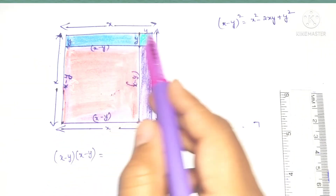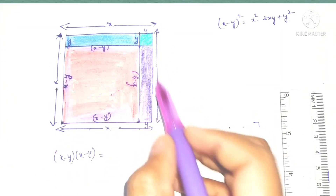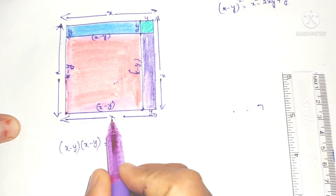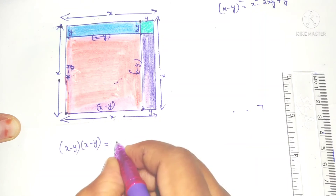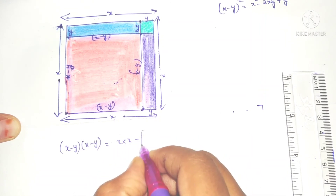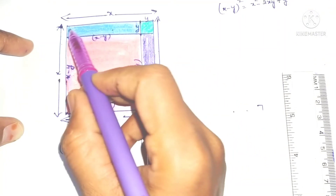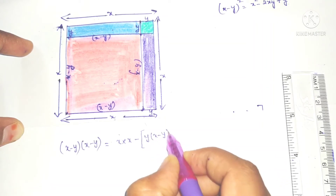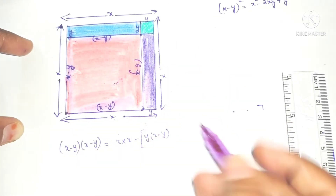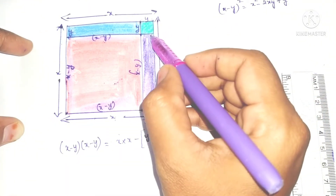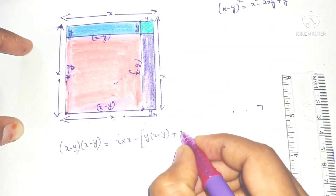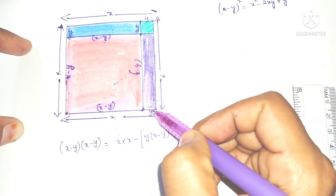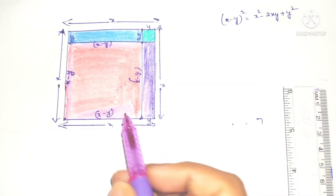To calculate this orange color area, we have to subtract this rectangle and this square and again this rectangle from the total area. The total area is x into x. We subtract the area of this rectangle, which is y into x minus y (length into breadth, area of rectangle formula), then plus this square which is y into y, which is y squared.